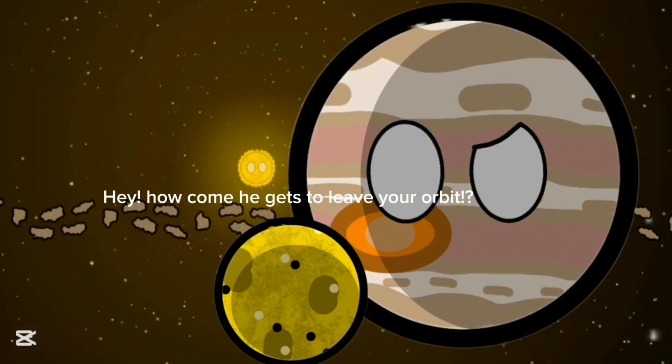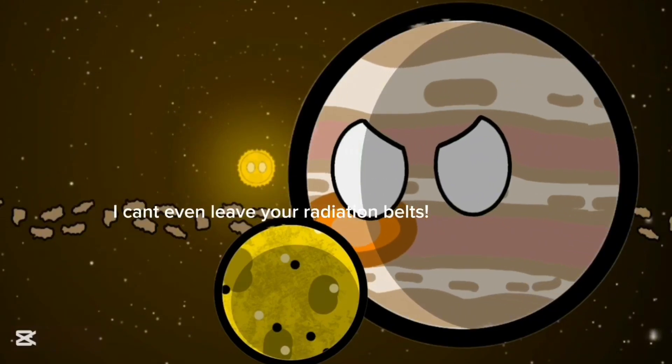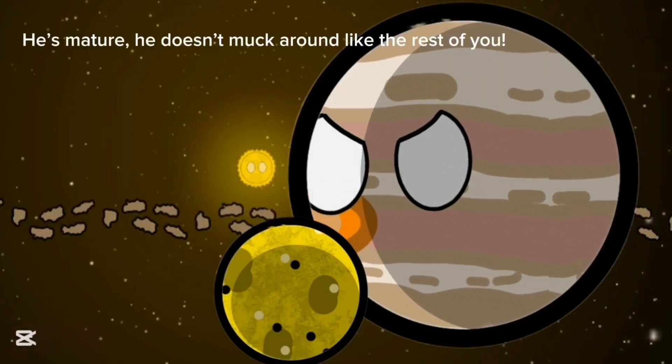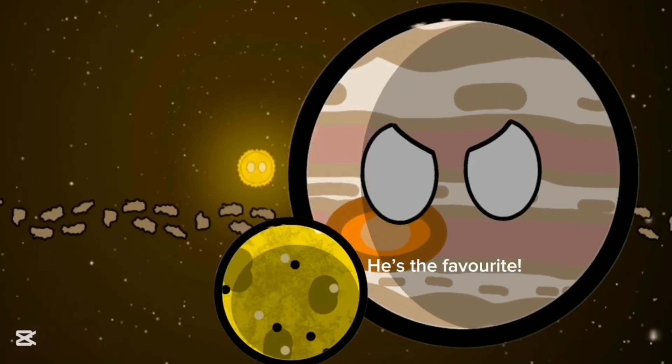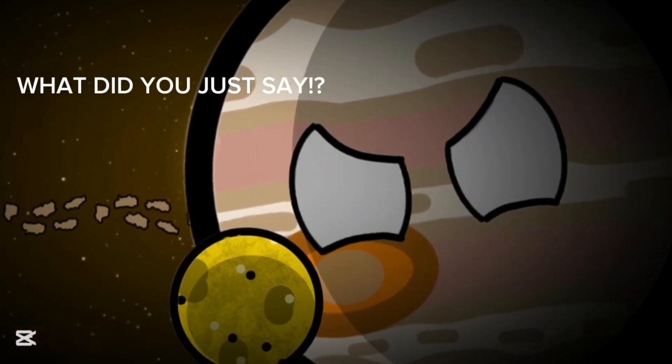Hey, how come he gets to leave your orbit? I can't even leave your radiation belts. He's mature. He doesn't muck around like the rest of you. He's the favourite. What did you just say? Nothing.